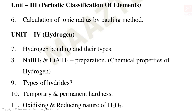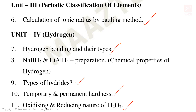Calculation of ionic radius by Pauling's method is very important. Unit 4: Hydrogen — types of hydrides and their explanation (5 mark), NaBH4 and LiAlH4 preparation and chemical properties, temporary and permanent hardness of water explanation (mandatory), and H2O2 oxidizing and reducing nature (5 mark).